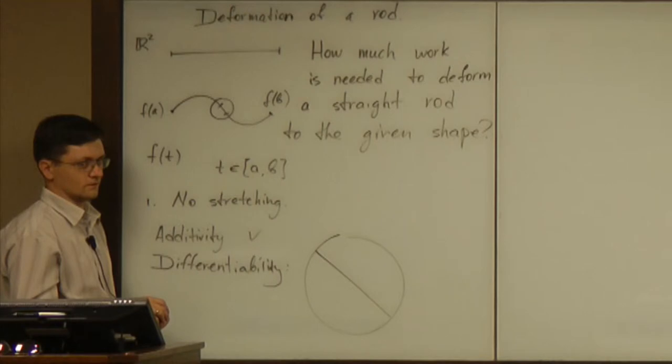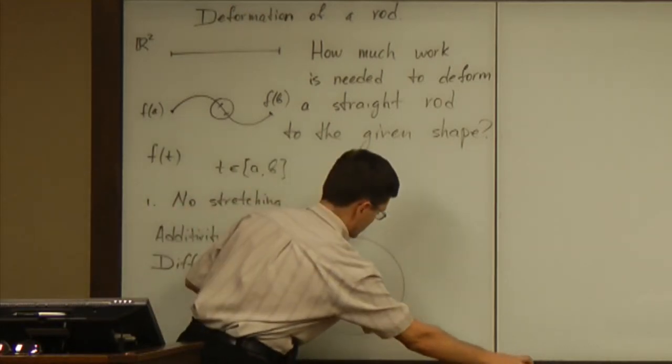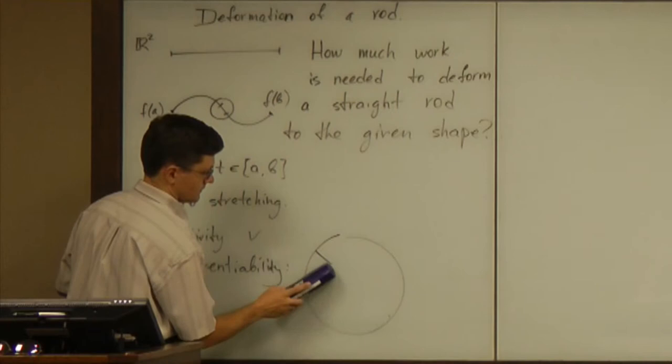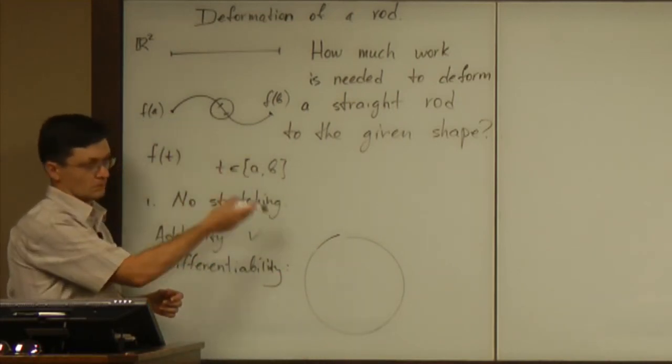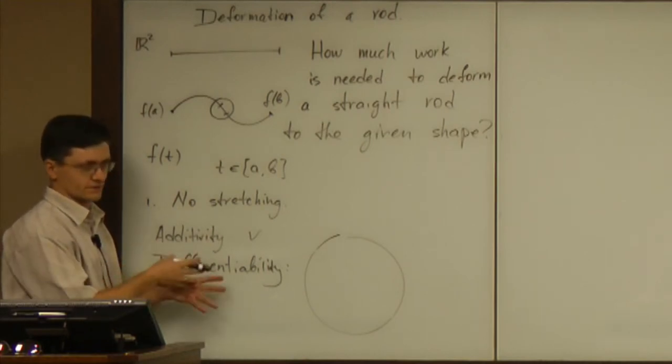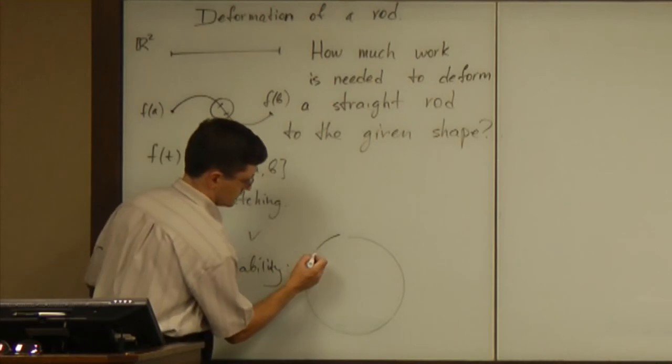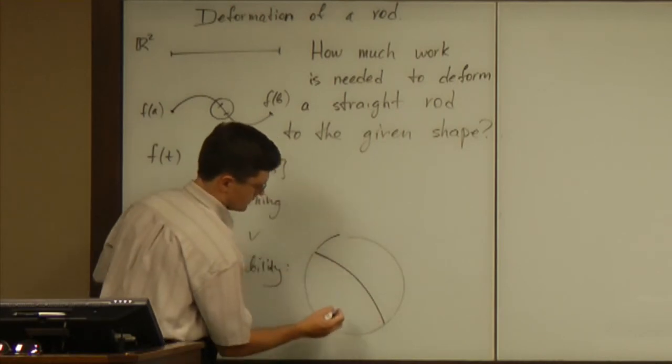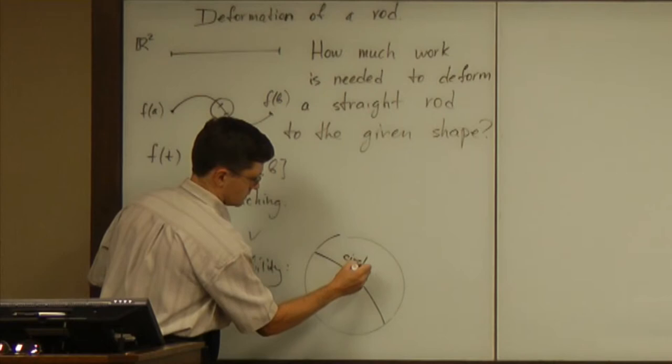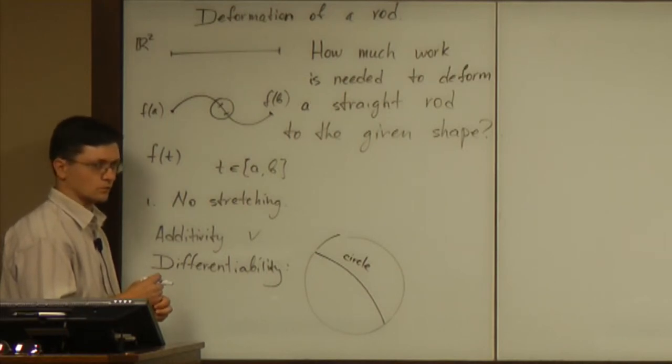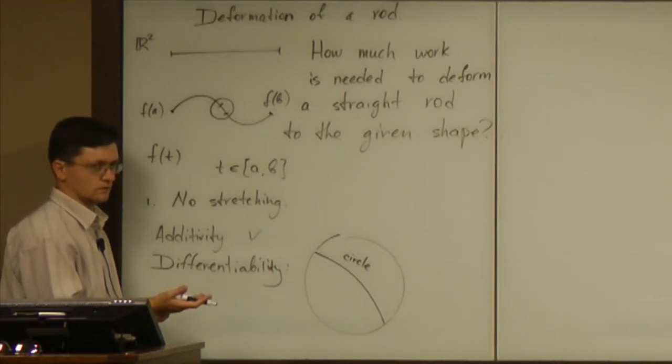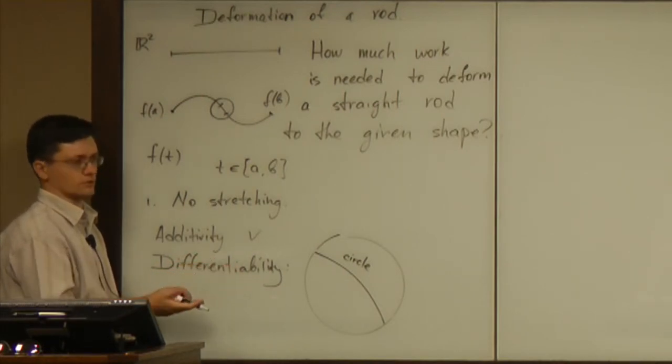A constant curvature. Possibly. So I should not linearize probably the whole thing because that trivializes the problem immediately. So if I see a constant curvature, a circle, then in this case would you expect the work needed to be proportional to what? Well, what is it clearly proportional to?